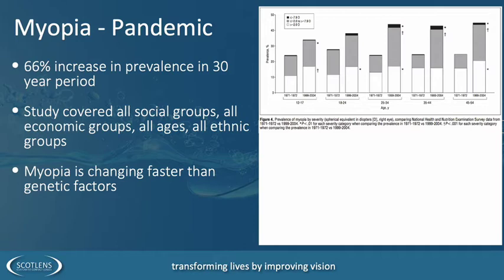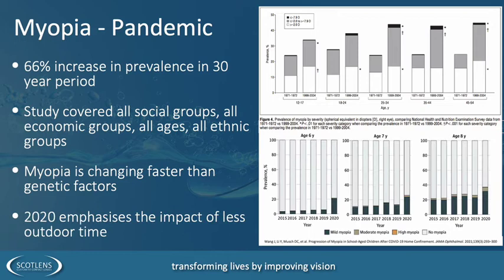The fact that our eyes adapt gives us an opportunity to control that adaptation. Last year, census-type data from China showed worryingly that in six, seven, and eight year olds there was a big jump in the prevalence of myopia in one year, due to lockdown. This gives a further clue that environmental factors of being indoors can promote the progression of myopia.